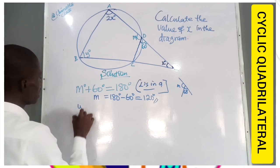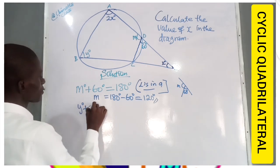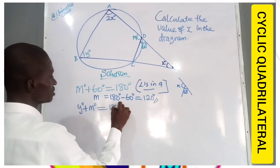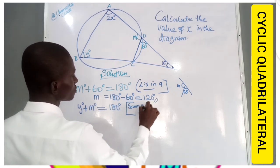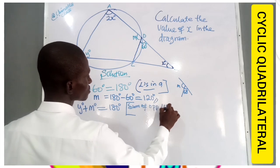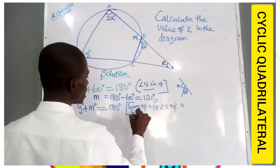So we have Y degrees plus M degrees is 180 degrees. Our reason is sum of opposite angles of a cyclic quadrilateral.